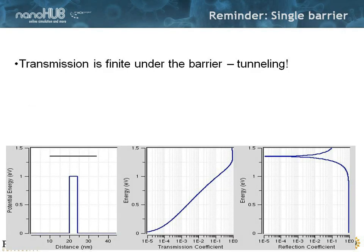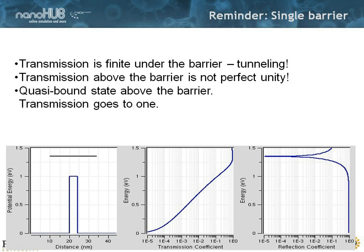As a reminder, here is a single barrier and the transmission through a single barrier from the previous lecture. There was an exponentially growing component of this transmission under the barrier height, and there was a quasi-bound state sitting above the barrier. So transmission is finite under the barrier — there is tunneling. The transmission above is not perfectly unity, and the transmission goes to one only for certain energies.